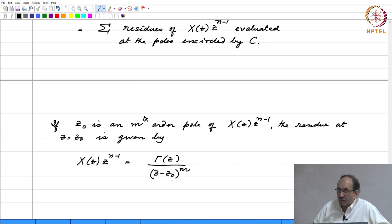Remember, z naught is an mth order pole. So, that can be factored out. Everything that is remaining is part of gamma(z).